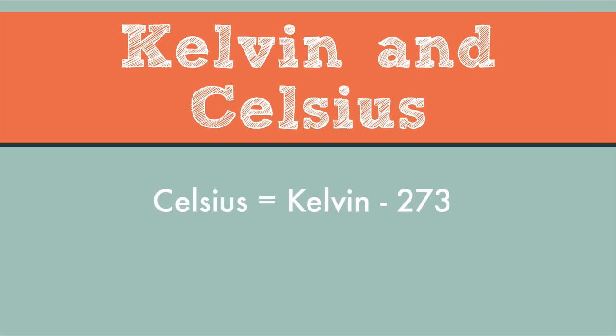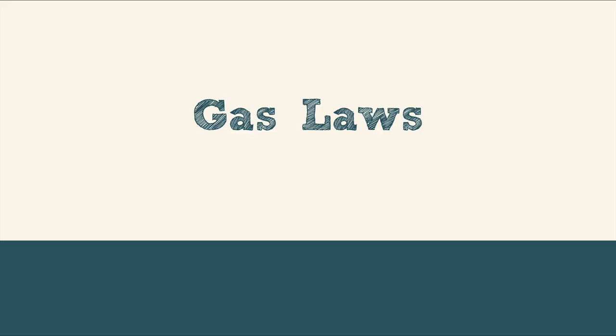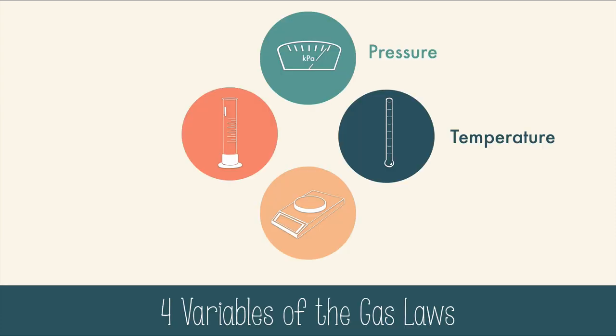To go from Kelvin to Celsius and Celsius to Kelvin, you just need to remember to subtract 273 to get Celsius and add 273 to get Kelvin. Now we're ready to learn some gas laws. Before we dive in, you need to know what the four variables of the gas laws are. We have pressure, temperature, volume, and moles. To see how one variable affects another, we have to hold the other two variables constant when we test them.